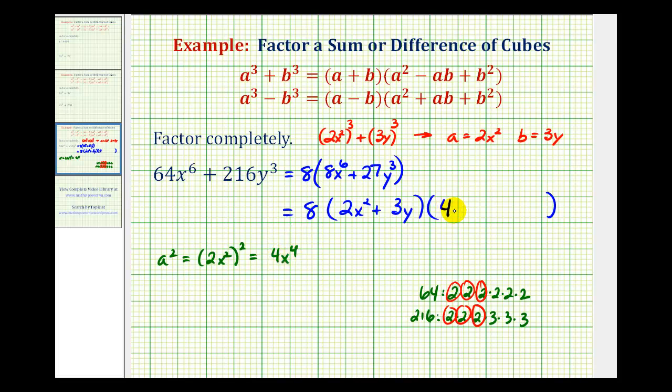Minus a times b. Well, a again is equal to 2x^2, and b is equal to 3y.